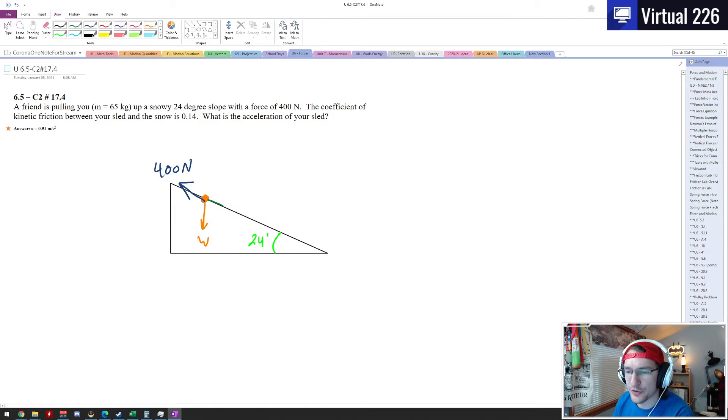And we know that there's some friction between the sled and the snow, so there's some friction opposing your motion. Remember friction doesn't always act up the hill; friction acts opposite the direction you're going. And we know mu here is 0.14.